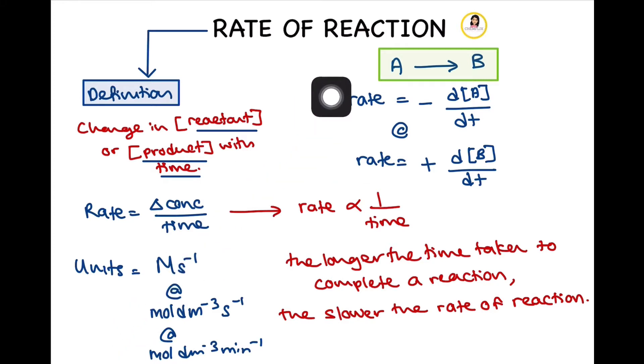Next, let's look into a general equation whereby A is converted into B. Here, A is our reactant and B is our product. By definition, rate can be defined as the change in concentration of A, which is our reactant, over the change in time.